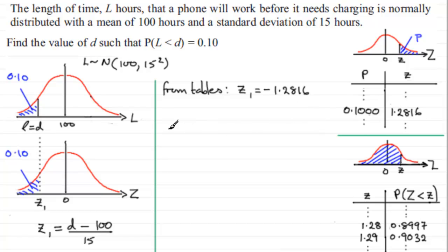I'm going to take this value though. I'm going to substitute it into here, and I now therefore have minus 1.2816 equals d minus 100 over 15. And all I need to do now is just rearrange this for d. So if I times both sides by 15 and add 100, I therefore have d equals 100 minus 15 multiplied by the 1.2816.